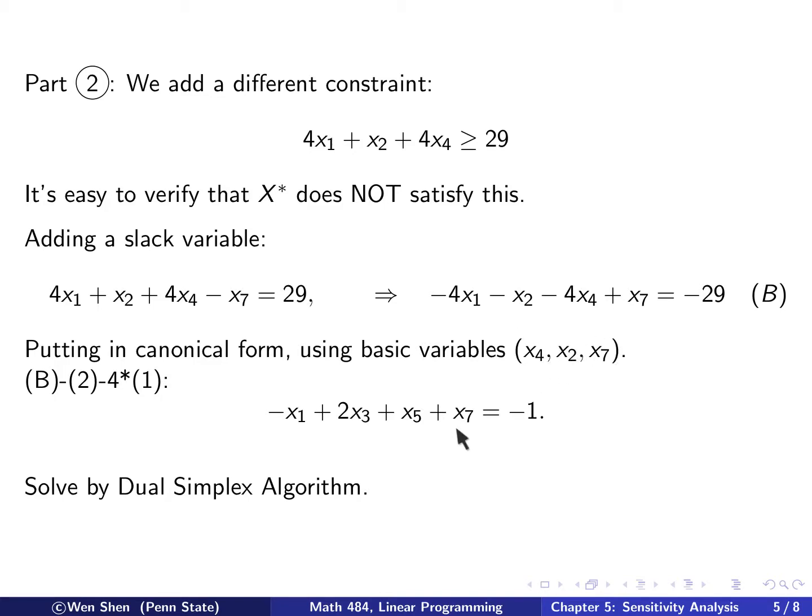And if I add this into the problem, I'll have basic variables, X4, X2, and X7, which is here. And I also observe that now I have B3, which is negative 1, so it's less than 0. And then we can solve by dual-simplex algorithm.